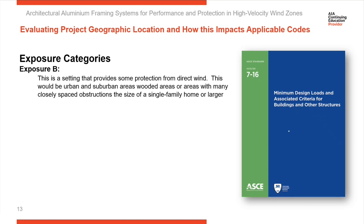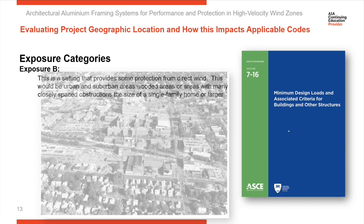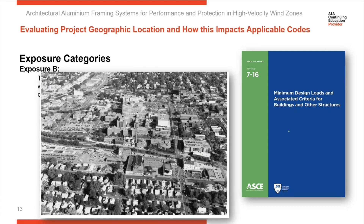Exposure B is more of an urban or suburban setting with many closely spaced obstructions that are going to stop wind from hitting directly onto your project. You'll have a lot of things like single and multifamily homes, small office buildings, and retail construction — and that provides some protection from direct wind.